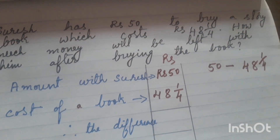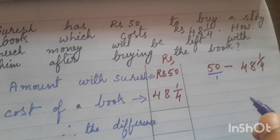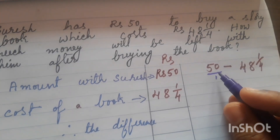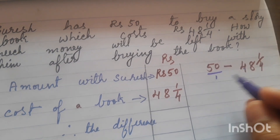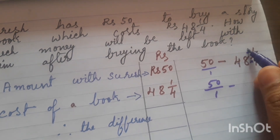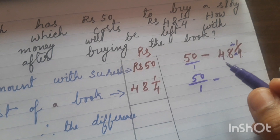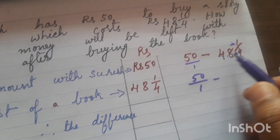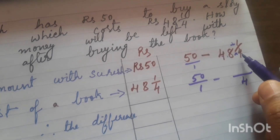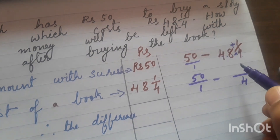Now we have to subtract. So 50 — we can convert and write as a fraction: 50 by 1. Any whole number in fraction form has 1 as denominator. So 50 by 1 minus. Here we convert the mixed fraction into improper. 4 into 48 is 192. So write the denominator as it is. 4 into 48 is 192, plus 1 is 193.